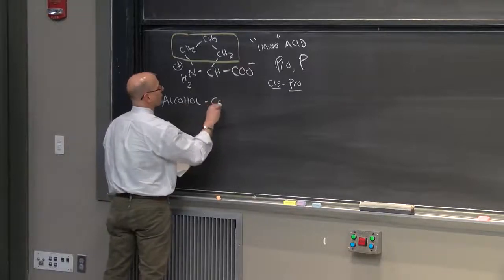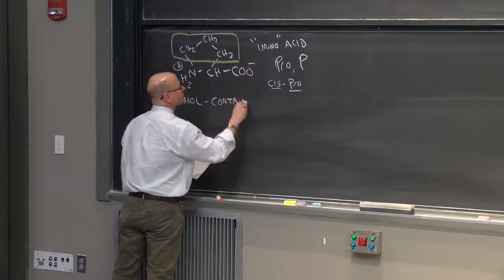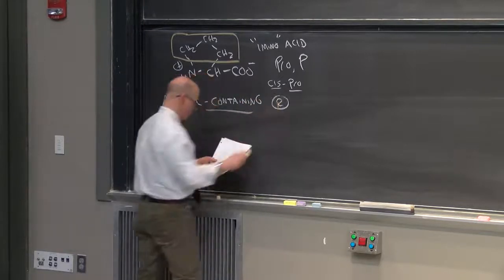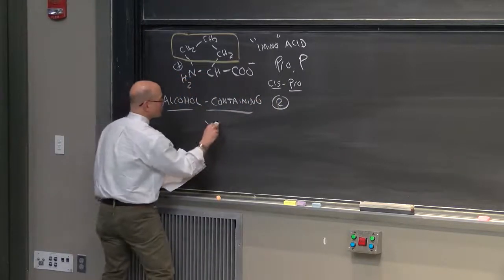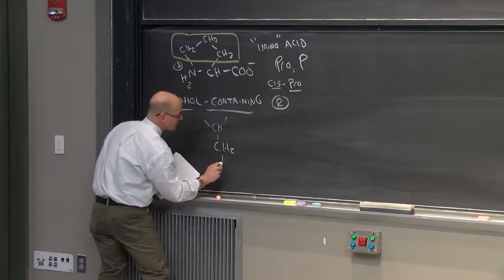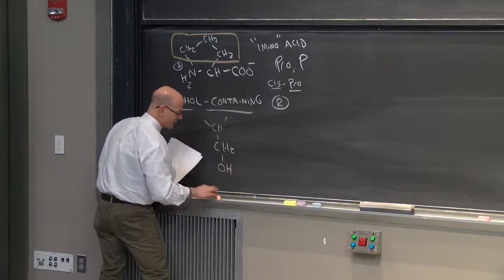Let's talk about alcohol-containing side chains, alcohol-containing R-groups. There are two of them here. Again, I'm only going to draw the alpha carbon. And the easiest one simply contains methanol as its side chain.